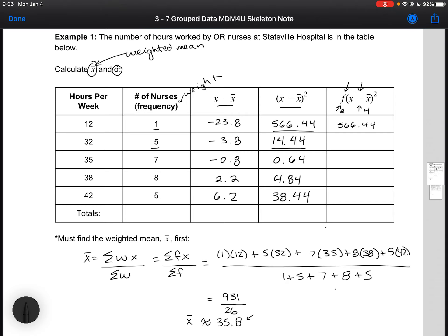7 times 0.64, 8 times 4.84, 5 times 38.44. Adding it up, this is the total that we're interested in to calculate the standard deviation. It gives us 874.04.